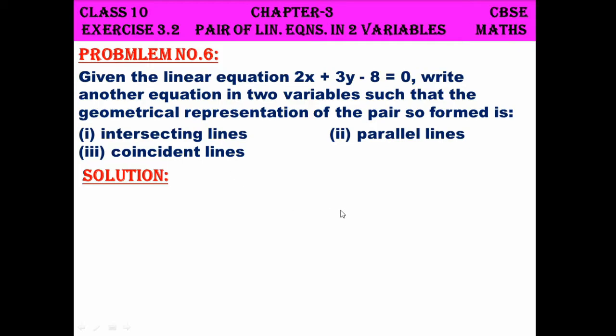That is, we are given one equation: 2x plus 3y minus 8 equals 0. Now we are going to write the other equation of the pair such that their geometric representation is intersecting lines. Then we are going to write another equation such that the pair represents parallel lines, and then another equation such that they are coincident lines. So this is how we are going to proceed with the problem.